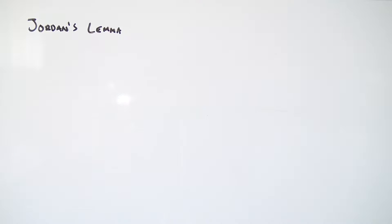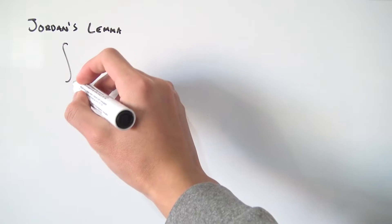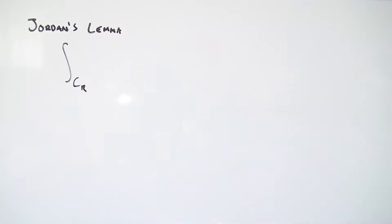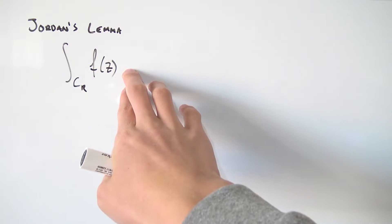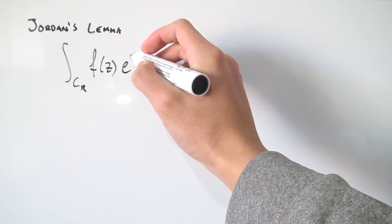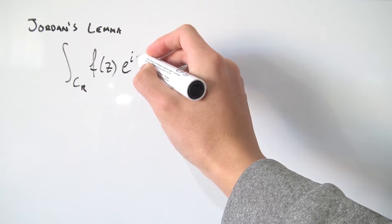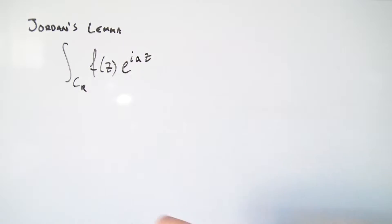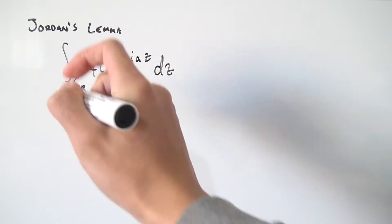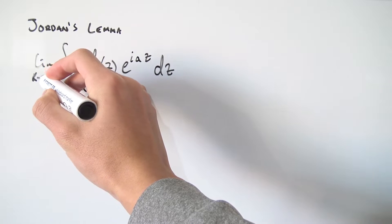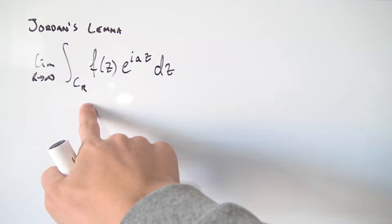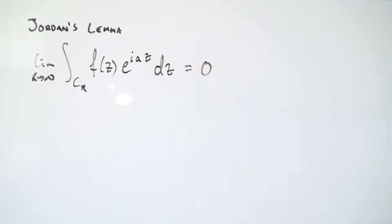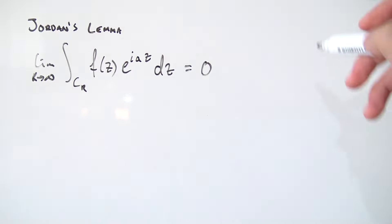So what exactly does Jordan's lemma say? It says that if we have some integral over some semicircular arc in our complex plane — let's call it C_r — of some complex-valued function f(z), and we can also have some exponential term e^(iaz) where a is a real number, then the lemma says that if we take the limit as r approaches infinity, integrating along the arc, we actually end up with zero.